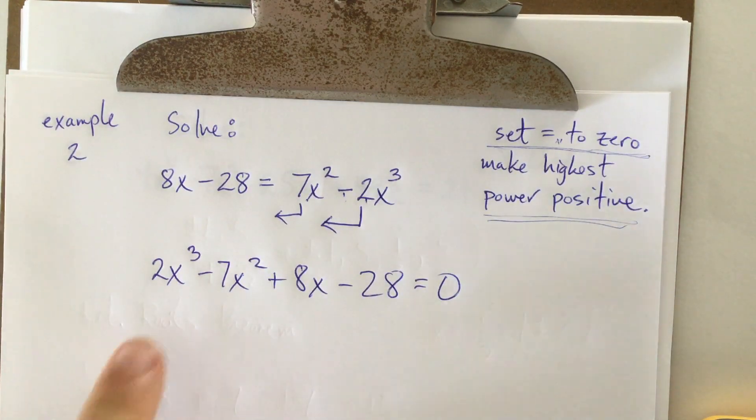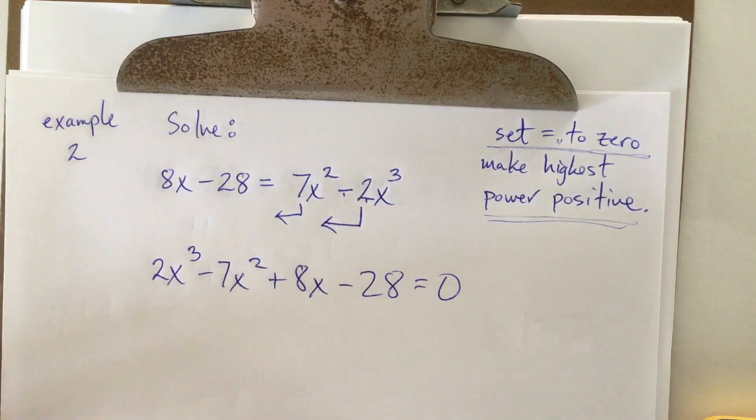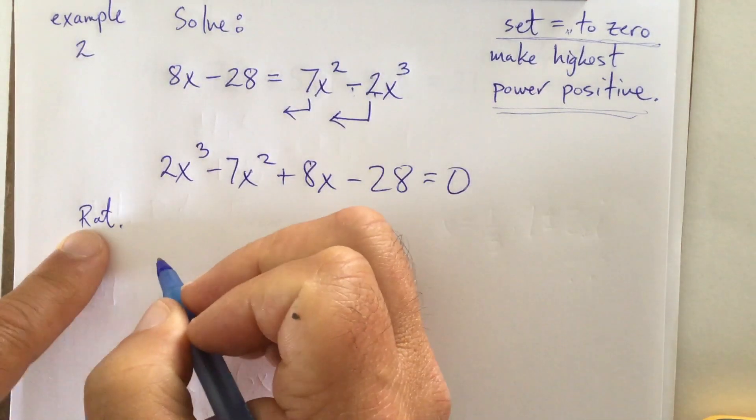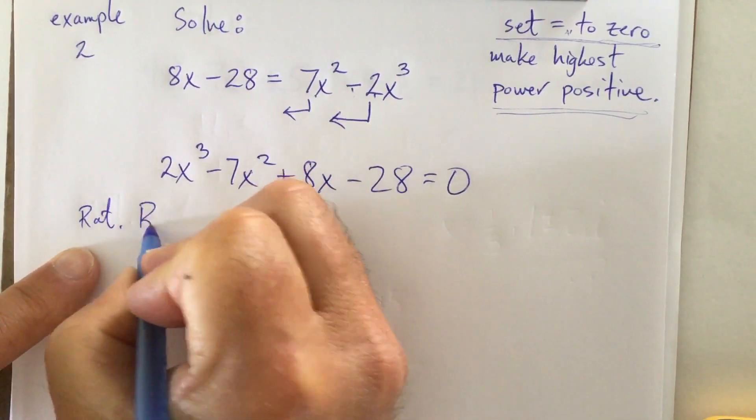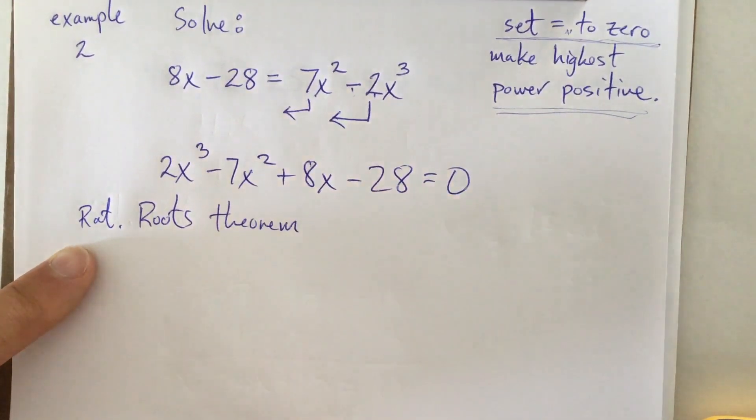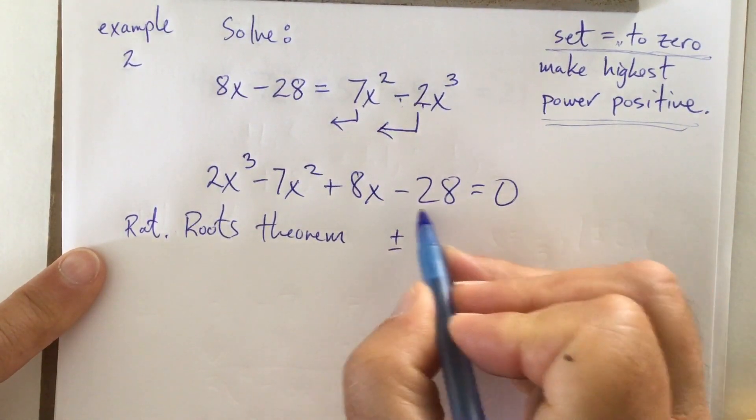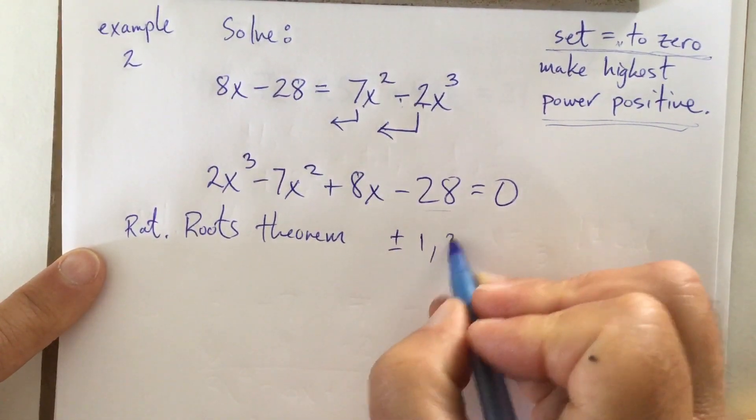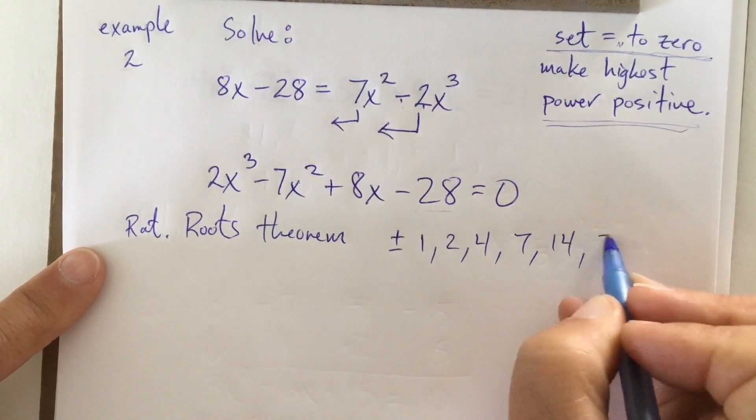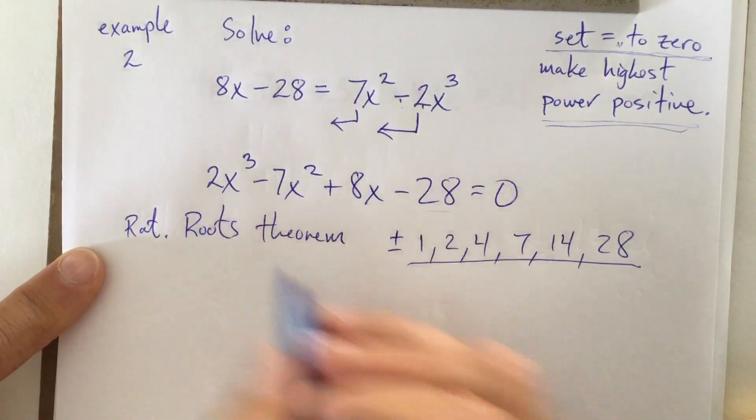Now, this guy, once again, that's not a one, that's a two. So my first step is use the rational roots theorem to give myself a starting place. Plus or minus. What goes into 28? One does, two does, four does, seven does, 14 does, 28 does. Yuck. That's a lot of stuff. What goes into two? One and two.